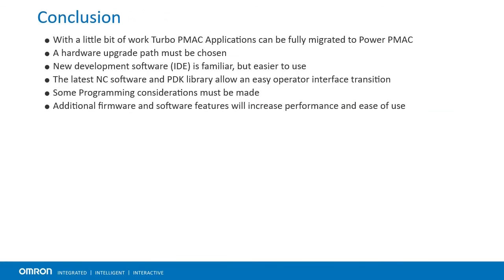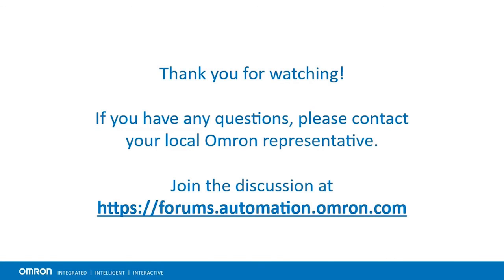With a little bit of work, Turbo PMAC applications can be fully migrated to Power PMAC. A hardware upgrade path must be chosen. New development software is familiar but easier to use. The latest NC software and PDK library allow an easy operator interface transition. Some programming considerations must be made. Additional firmware and software features will increase performance and ease of use. Thank you for your attention. We hope that this video presentation was helpful. If you have any questions, please feel free to reach out to your local OMRON representative.